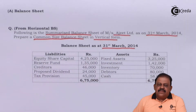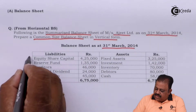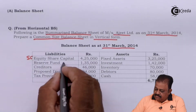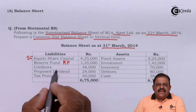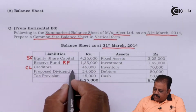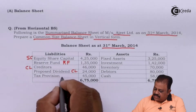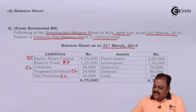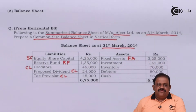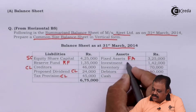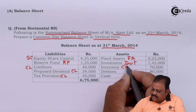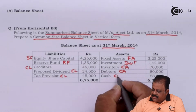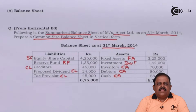Equity share capital is part of shareholders fund. Share capital and reserve fund are parts of shareholders fund. Creditors, proposed dividend, and tax provision are current liabilities. Fixed assets are the first item in application of funds, followed by long-term investments. Inventory, debtors, and cash are current assets. We will first prepare the vertical balance sheet and then prepare the common size statement.